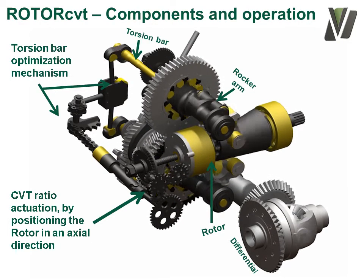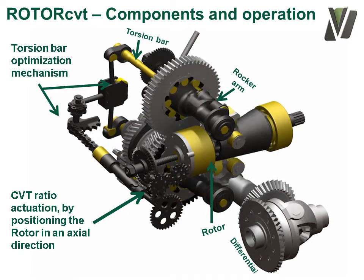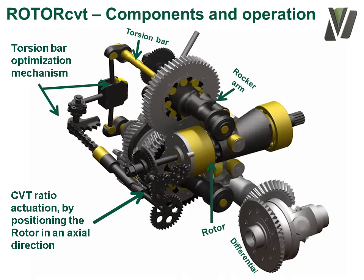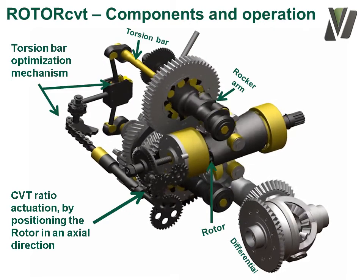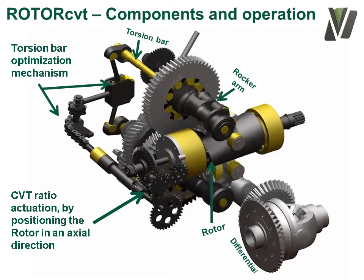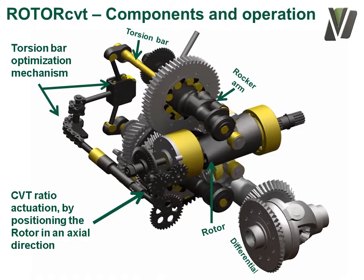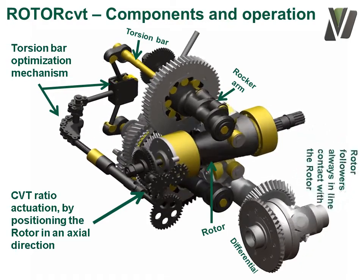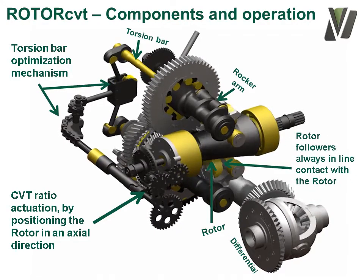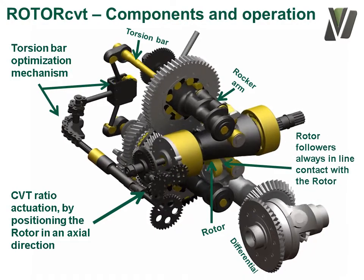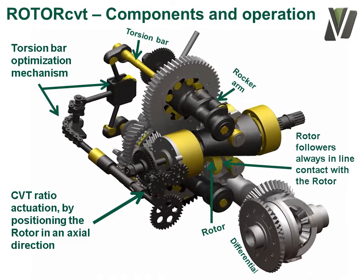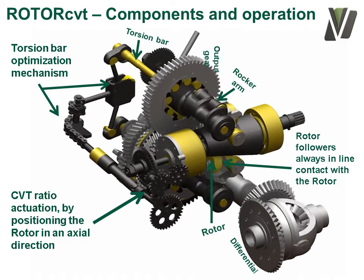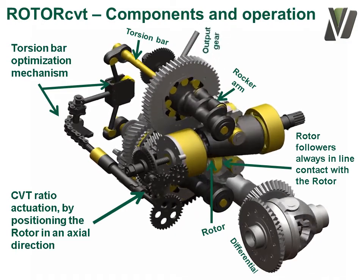The purpose of the two torsion bars, which are coupled to the rocker arms and also coupled together via the torsion bar optimization mechanism, is to always keep the rocker arms, rotor followers, and rotor in contact with each other. Each rocker arm drives an output gear via a one-way clutch.